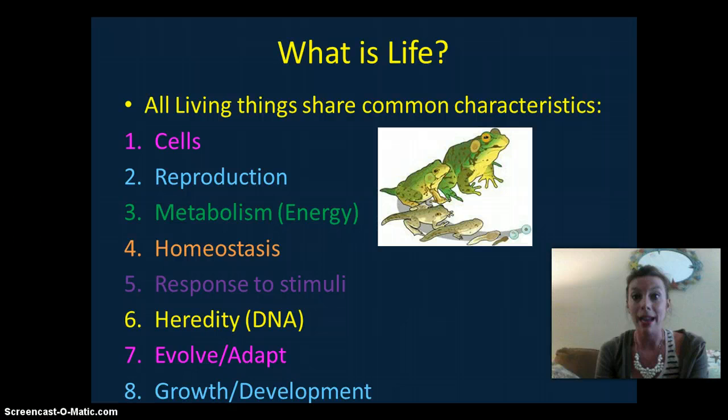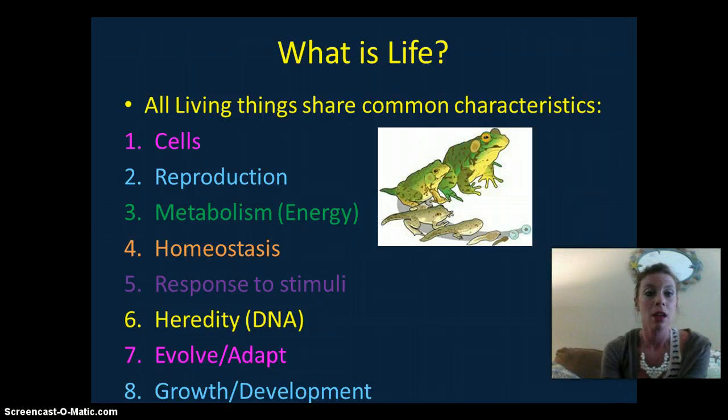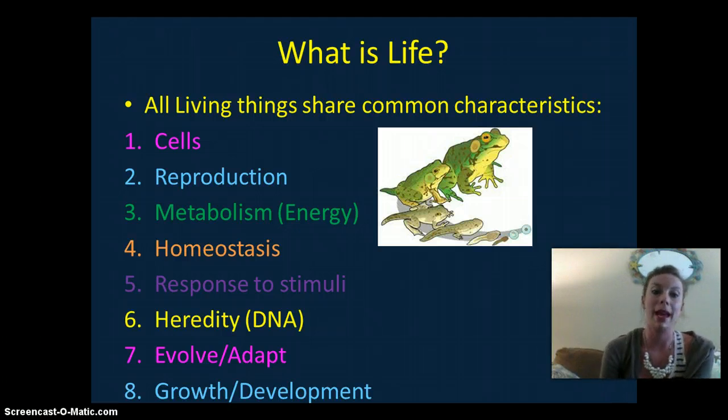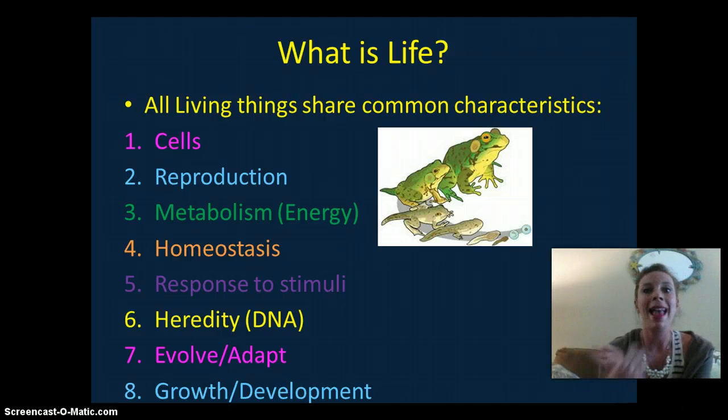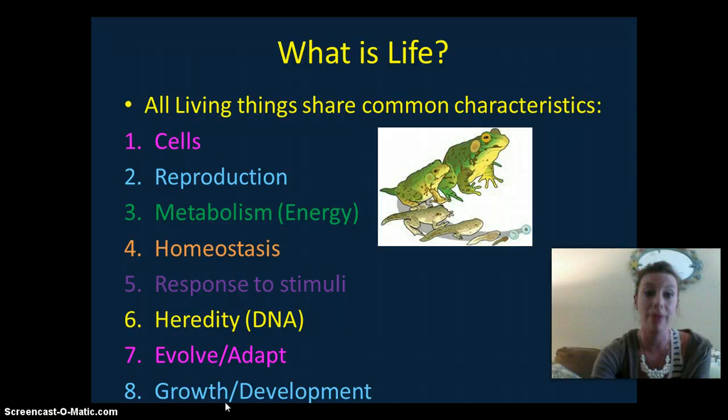All living things contain DNA. If you remember, eukaryotic cells contain their DNA within their nucleus. This is the universal genetic code that all organisms are going to share. Prokaryotic cells have the DNA within the cytoplasm. All living things are going to evolve or adapt to their environment, and all living things are going to grow and develop. So think about any living thing. They're going to fall under these categories and share all of these characteristics or have the ability to share these characteristics.